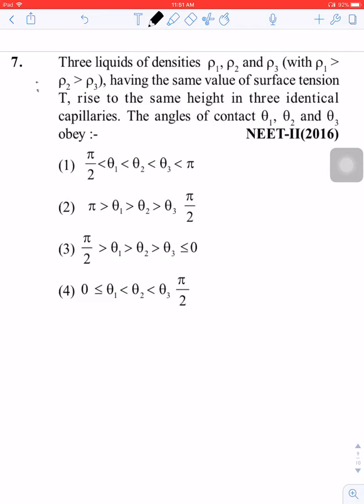The capillary rise formula: h equals 2T cos theta upon Rho g r.